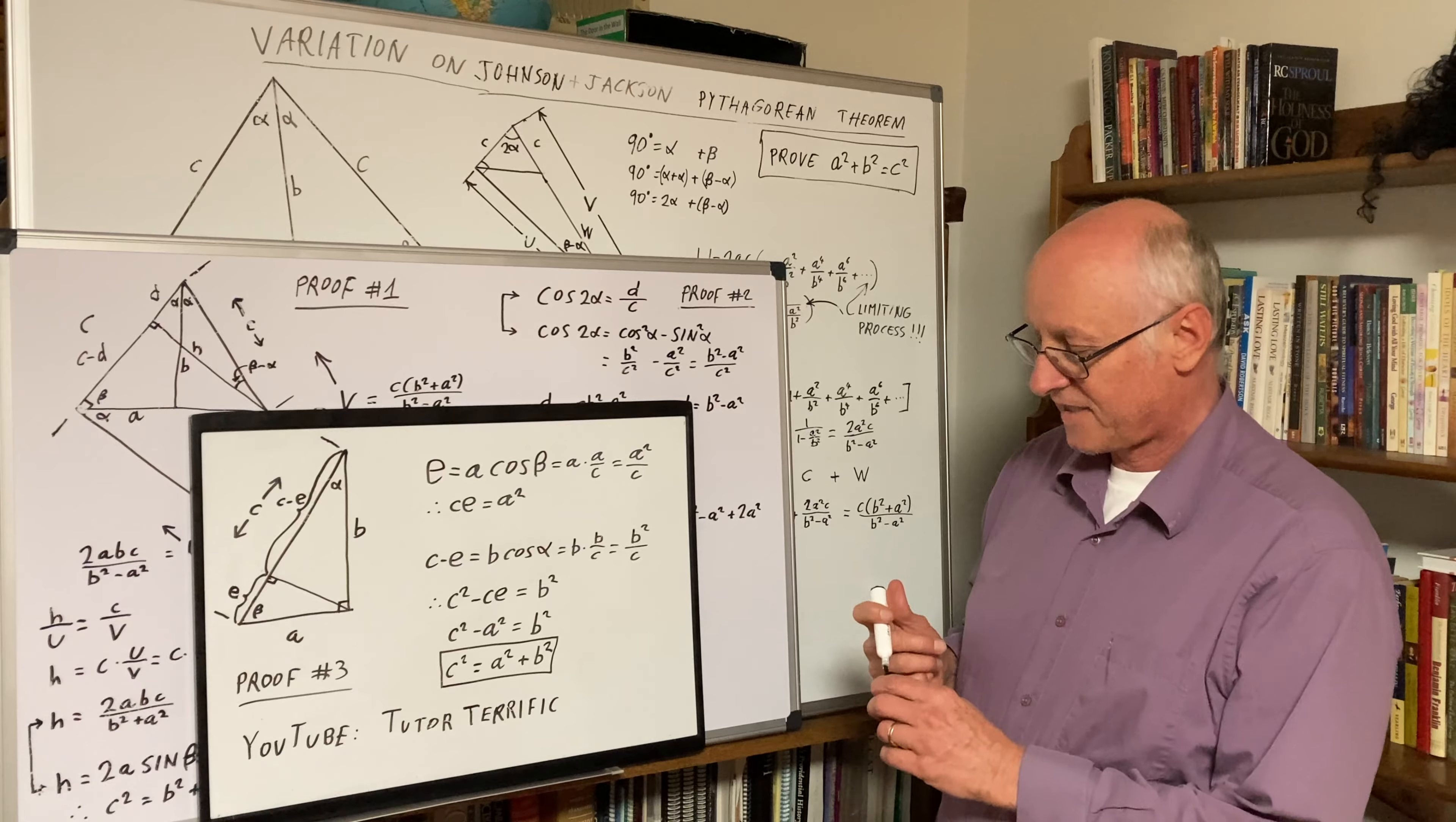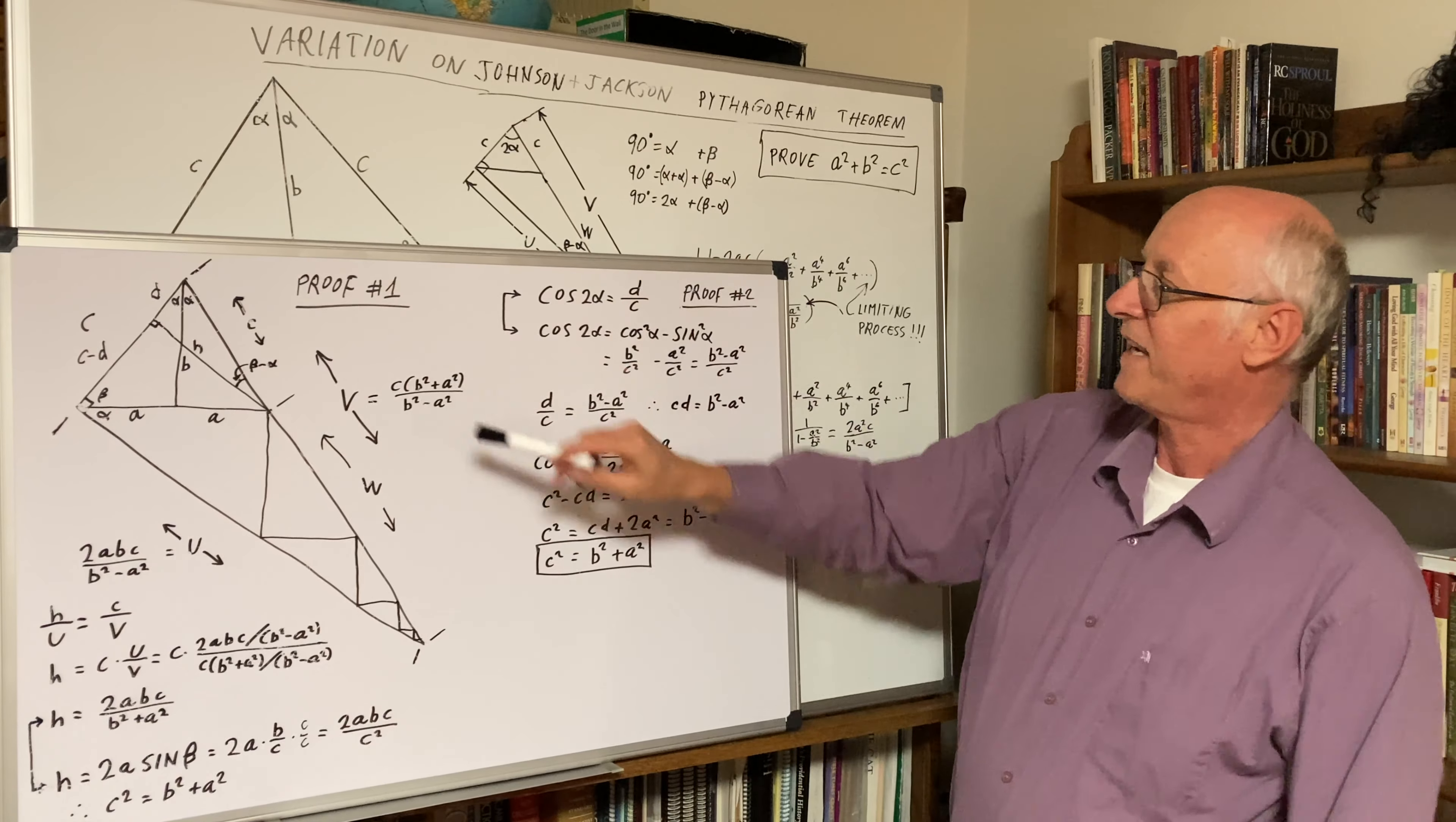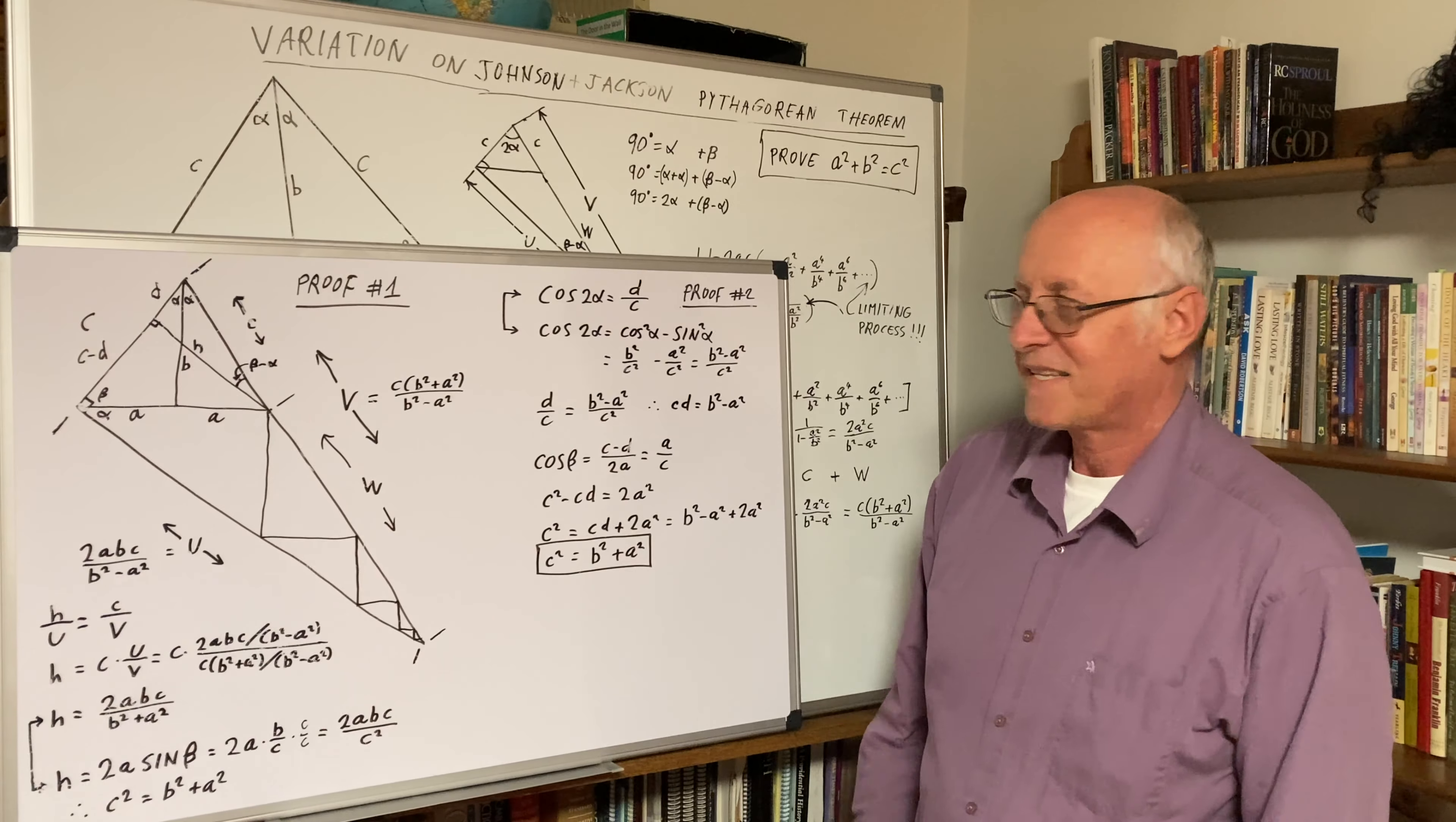We have essentially these three proofs. They're pretty straightforward. I like this one the best. Then here are the other two proofs. This is closer to what Johnson and Jackson are doing. This is heavy, in my opinion, because it requires this infinite process. That's calculus. But it is what it is. Thank you.